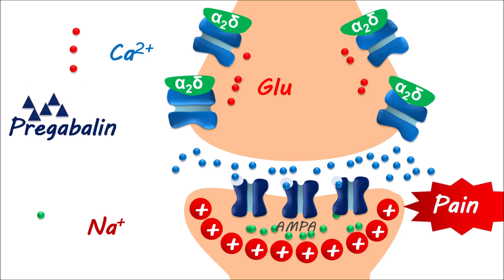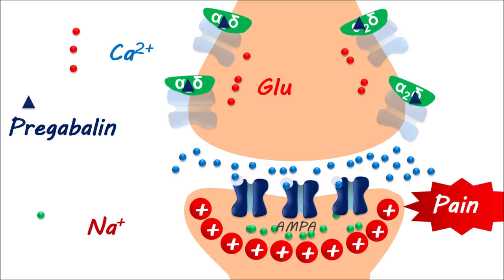Pregabalin strongly binds to this alpha-2-delta subunit, thereby reducing its activity. This leads to a reduced opening of calcium channels and a decreased glutamate release. In this way, pregabalin can control pain and seizure induction.